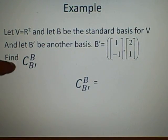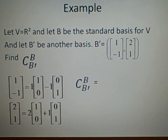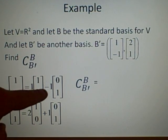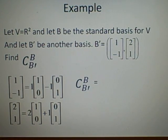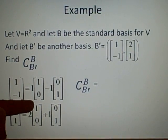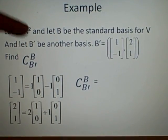Find C_B'^B. So to do this, we've got to write the elements of B prime in terms of B. So we have [1,-1] has to be written 1 times [1,0] minus 1 times [0,1]. And this [2,1] can be written 2 times [1,0] plus 1 times [0,1].